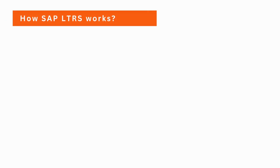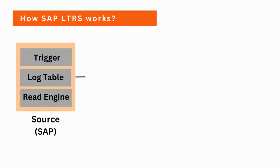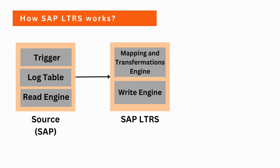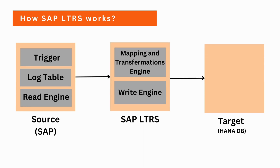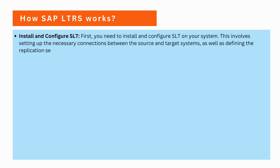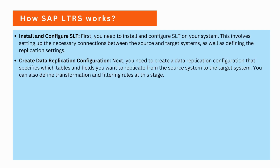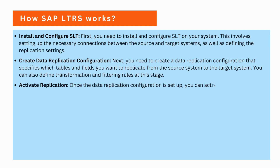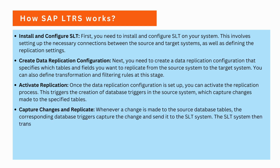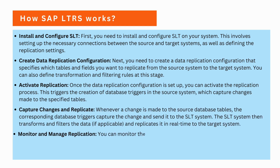Let's now check how SLT works. To establish replication between two different systems with SLT, there are different types of steps involved: installation and configuration of SLT, create data replication configuration, activate replication, capture changes and replicate, and monitor and manage replication.